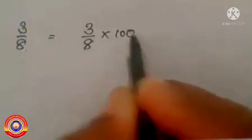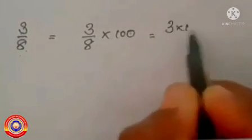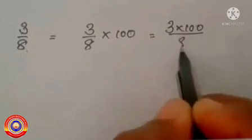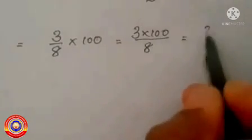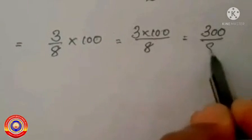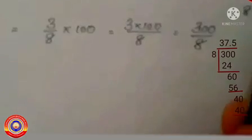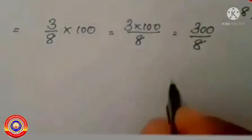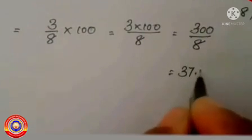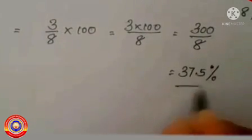Next question: 3 by 8. For converting 3 by 8 into percentage, multiply 3 by 8 into 100. That is equal to 3 into 100 by 8. 3 into 100 is equal to 300 by 8. On dividing 300 by 8 we get 37.5. Therefore 3 by 8 is equal to 37.5 percentage.